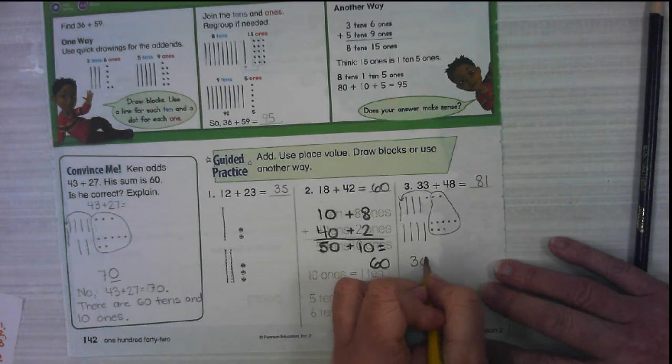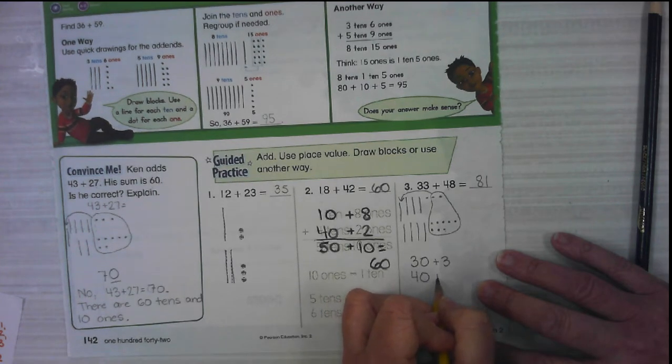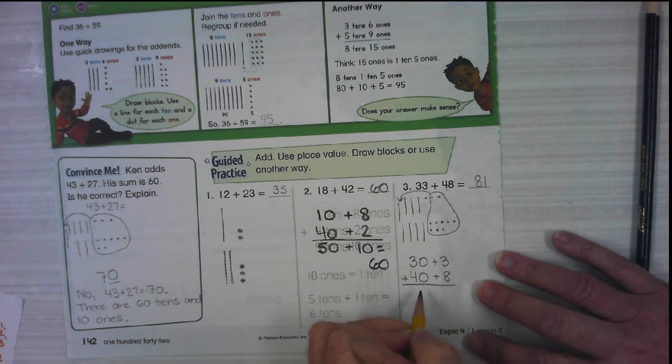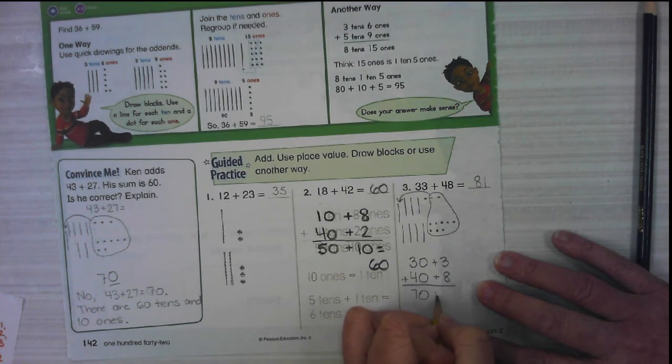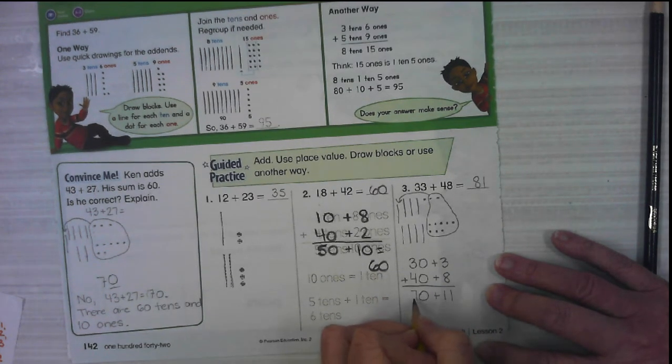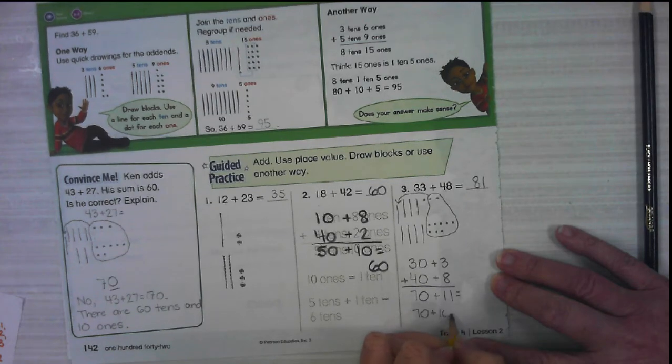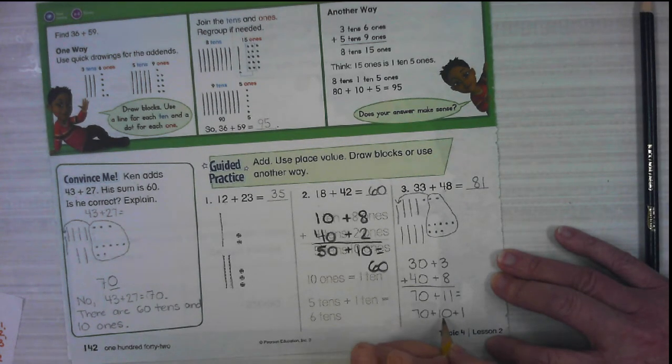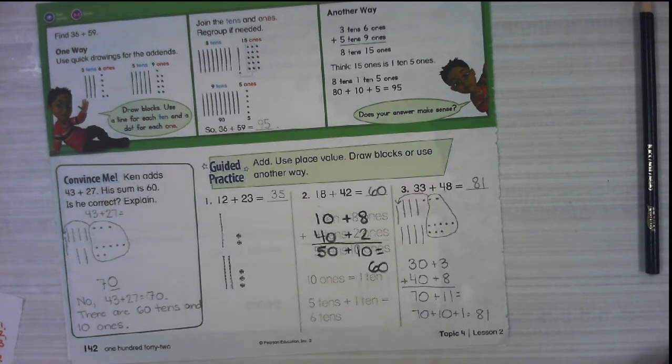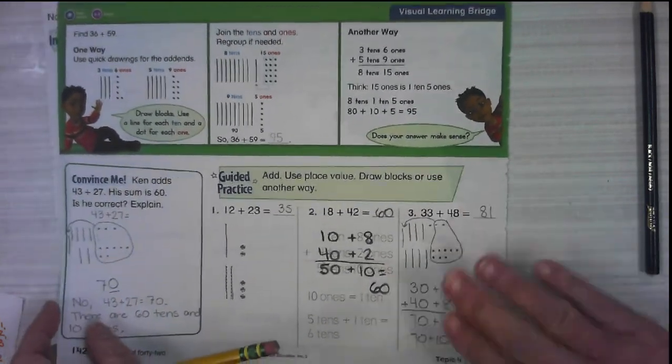I'm going to do it this way as well. 33 is the same thing as 30 plus 3. That's the expanded form. 48 is 40 plus 8. 30 plus 40 is 70. 3 plus 8 is 11. 70 plus 10 is 80. 80 plus 1 is 81. Either one of those is fine. The number line way is also fine as long as you can show it in some kind of picture on your paper.